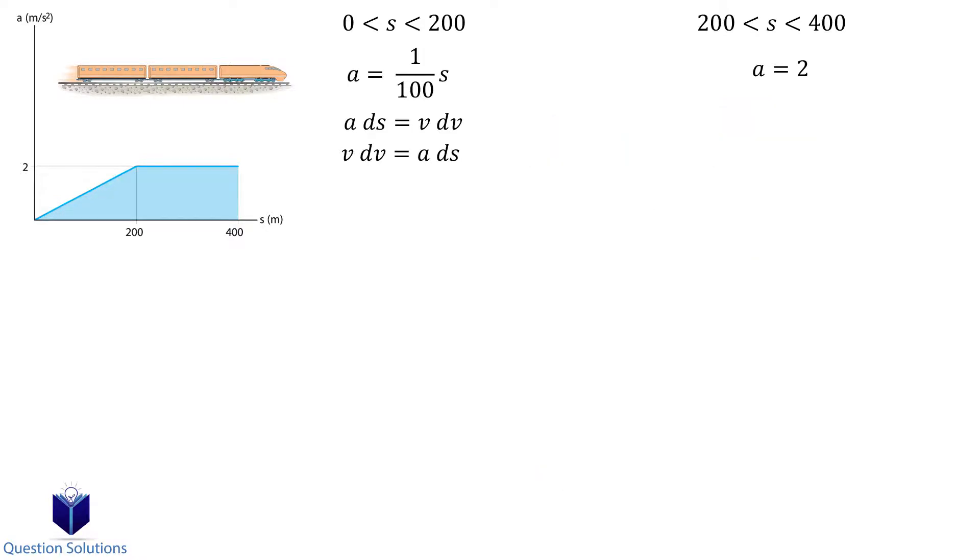We can take the integral of this equation to find the velocity. Since the train starts with the velocity of 0 meters per second and a displacement value of 0 meters, those will be our lower bounds.